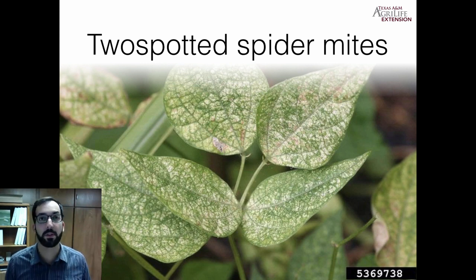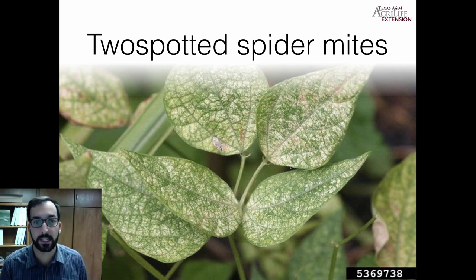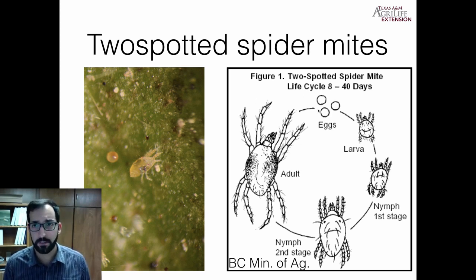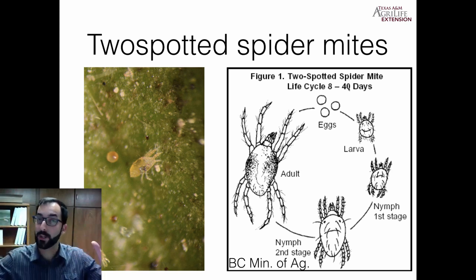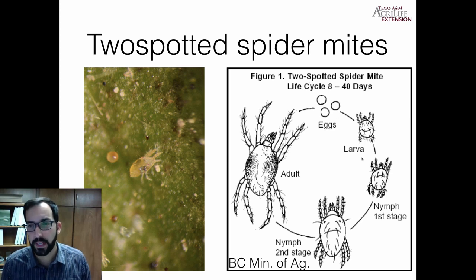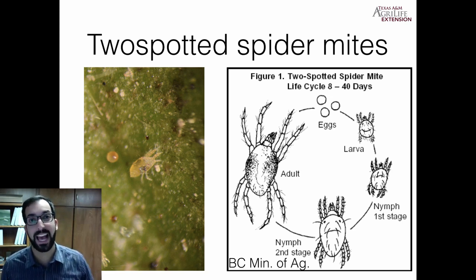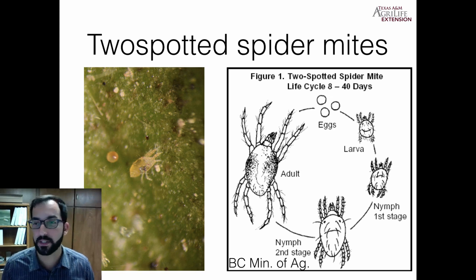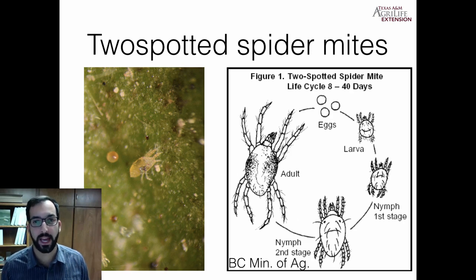Similar to thrips, two-spotted spider mites cause a type of sucking damage — stippling and discoloration in the leaves. Their life cycle can be anywhere between 8 to 40 days from egg to adult, depending greatly on temperature. Higher temperatures mean quicker development and higher populations. From eggs they go to larvae, where they only have six legs — spiders generally have eight, but in this one immature stage they only have six. Then they become first nymph, second nymph, and then adult.